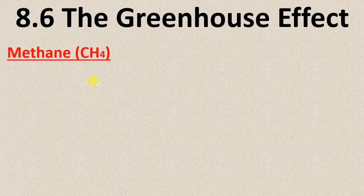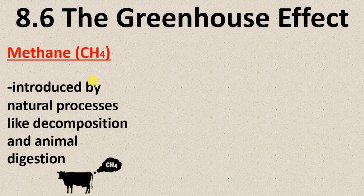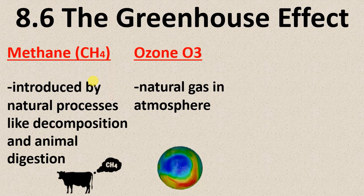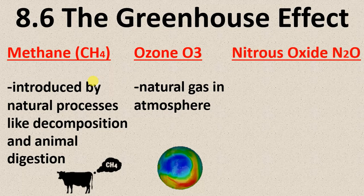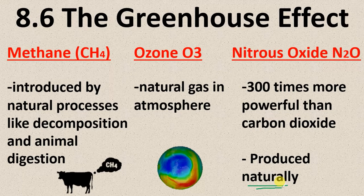A couple of side notes about the other three: methane is introduced by decomposition and animal digestion, which is a natural process. Ozone is already kind of there as the ozone layer — an increase could cause temperatures to rise. Nitrous oxide (dinitrogen monoxide) is 300 times more powerful than carbon dioxide, but there's very little of it; it's produced by bacteria breaking down things in the soil.